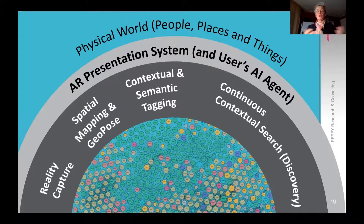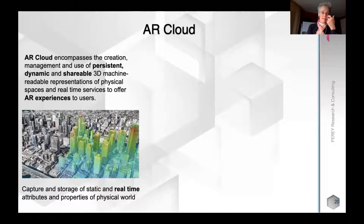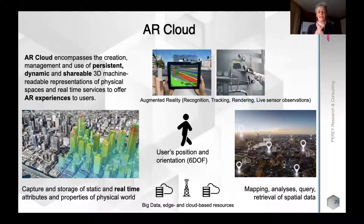This framework, which I propose we use when describing the AR cloud system, joins all of these elements together. To summarize: AR cloud is a system that encompasses the creation, management, and use of a persistent, dynamic, and shareable machine-readable representation of the physical world. It has many forms already — we've been modeling the physical world for a very long time. It also pertains to connected objects, and the user's position is fundamental. By mapping, analyzing, and continuously querying spatial data, we can provide very rich, immersive augmented reality experiences.